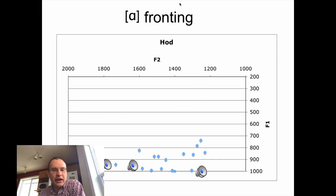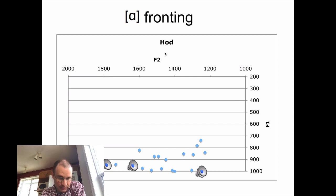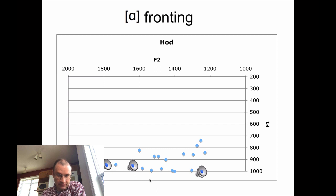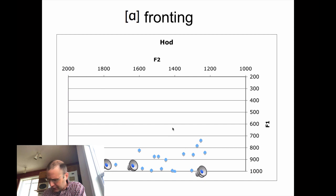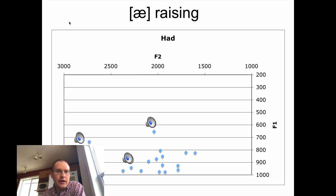I have some old samples from when I was teaching in Illinois — when I had people do the production exercise I'm going to have you do. This is the word H-O-D, which you might say as 'hod,' but if you front that vowel, it sounds more like 'had' — that's characteristic of people from the Chicago area. Another characteristic is /æ/ gets raised. So 'had' might sound like 'had' to you, but if you raise it a bit, it sounds more like 'hæd' or 'heid.'